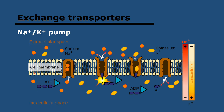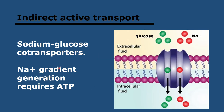We also have exchange transporters, which are a form of active transport. They transport different ions in opposite directions and are very important in creating a membrane potential in neurons for nervous impulses to occur. A good example is the sodium-potassium pump: it's a cycle whereby three sodium ions are pumped out and two potassium ions are pumped in, and ATP is required in the process.